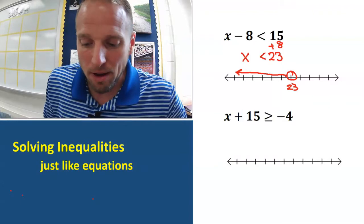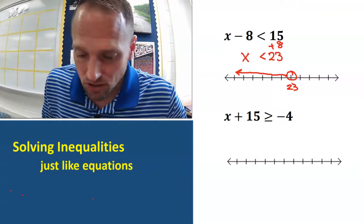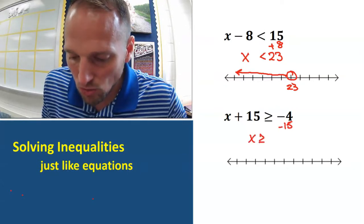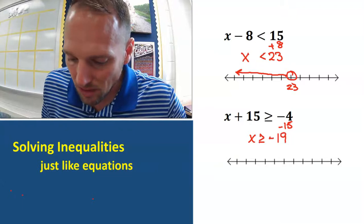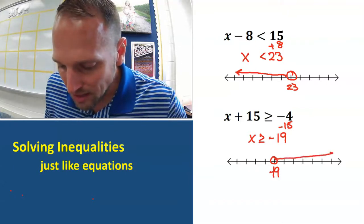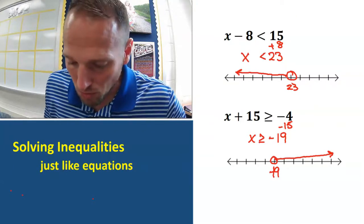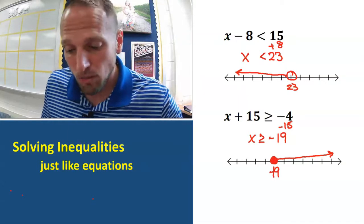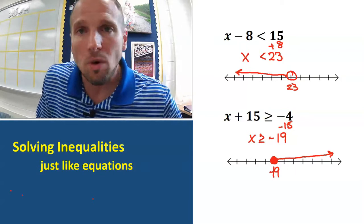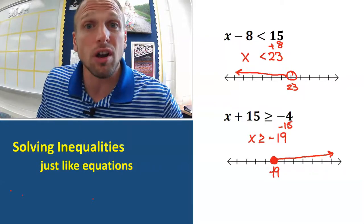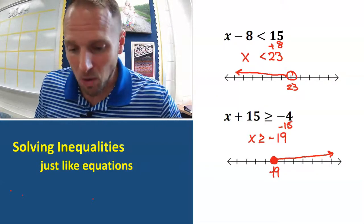For the next one, just subtract 15 over, and we get X is greater than or equal to negative 19. Mark negative 19 on the number line — follow the arrow, this is going to the right. There's the extra mark under it, so extra mark means make it dark: negative 19 is included in the solution. Solve it like a one-step equation — cross the line, change the sign; if there's the extra mark, make it dark.